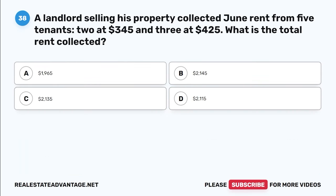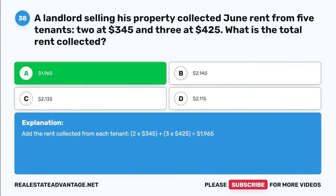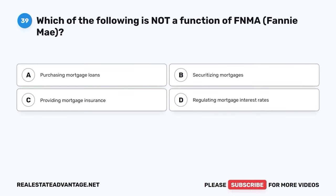Question 38. A landlord selling his property collected June rent from five tenants, two at $345 and three at $425. What is the total rent collected? A. $1,965. The correct answer is A: $1,965. Add the rent collected from each tenant: (2 × $345) + (3 × $425) = $690 + $1,275 = $1,965.